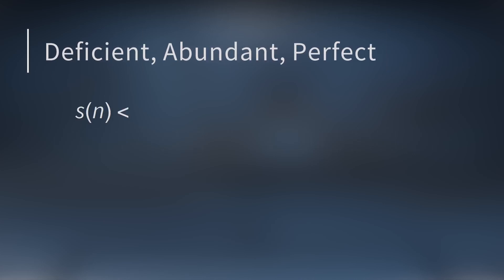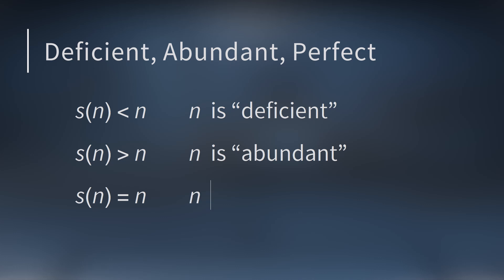So people broke all the integers up into three different categories. If the sum of the proper divisors is less than the number, we call it a deficient number. If the sum of the proper divisors is larger than the number, we call it an abundant number. And if the sum of the proper divisors is equal to the number itself, we call it a perfect number.